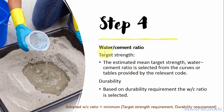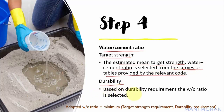Step 4: Water-cement ratio — this is governed by target strength and durability requirements. For the estimated target strength, the water-cement ratio is selected from curves or tables provided by the relevant code. In the absence of strength versus water-cement ratio data, a conservative estimate is made based on accepted 28-day compressive strength. The water-cement ratio corresponding to the minimum of both strength and durability requirements is adopted.